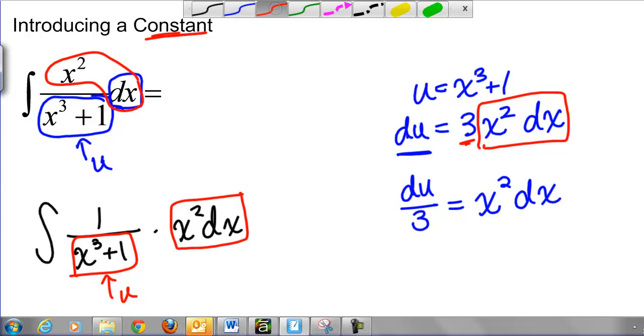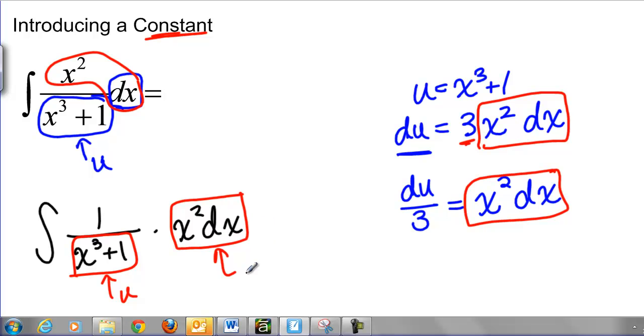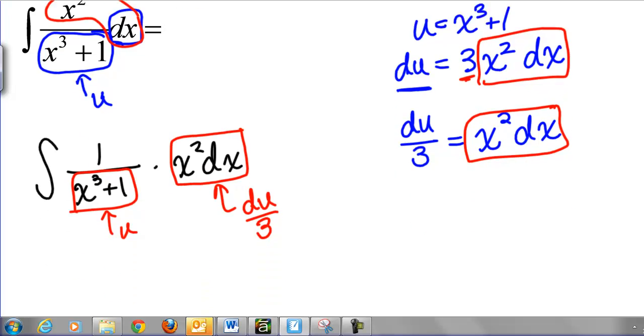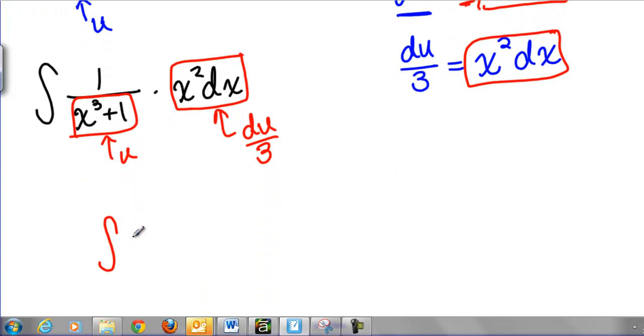Now note that we have an X squared DX equal to something just like in our problem, so we can now say that in our problem X squared DX is going to become DU over 3. Making the substitution, our new integral is then 1 over U times DU over 3. Now I can pull that 3 out front and make this 1 third the integral of 1 over U DU.